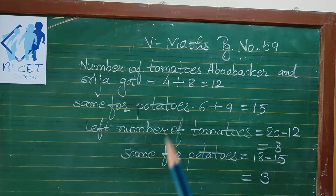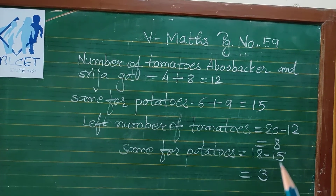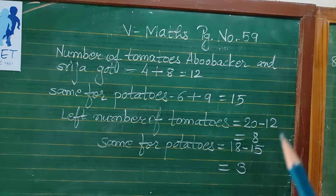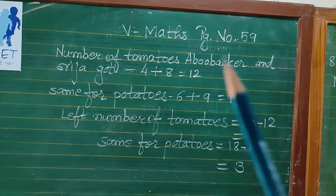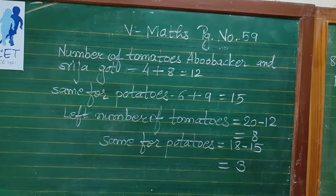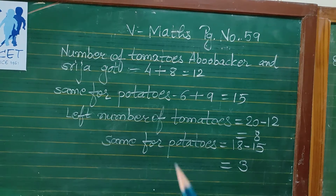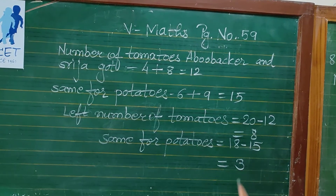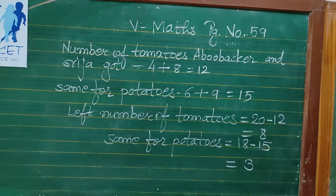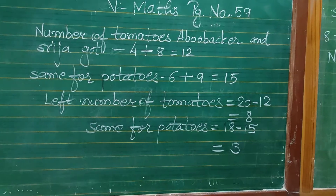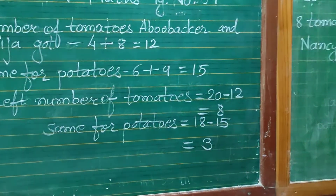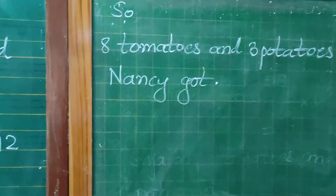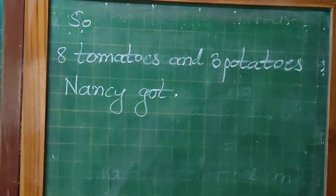Left number of tomatoes is equal to total number of tomatoes, 20. So, 20 minus 12 is equal to 8. Same for potatoes, 18 minus 15 is equal to 3. So, Nancy got 8 tomatoes and 3 potatoes.